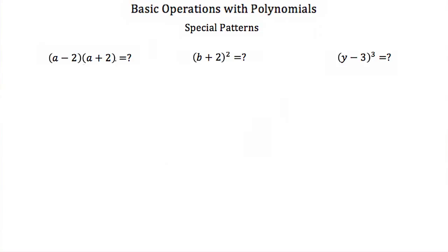Let's see if we can recognize these patterns with some examples. We have a minus 2 times a plus 2 — the same number in both binomials, one subtracted and one added. Using the special property, the answer is just a squared minus 2 squared.